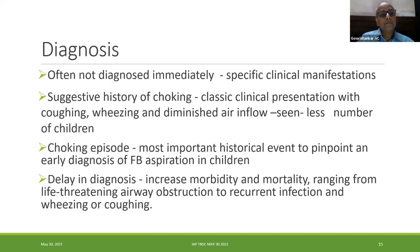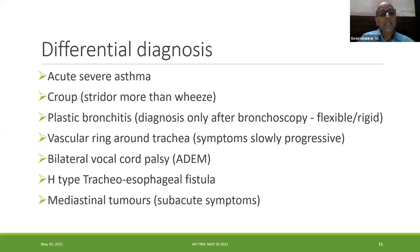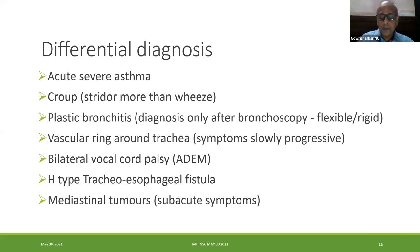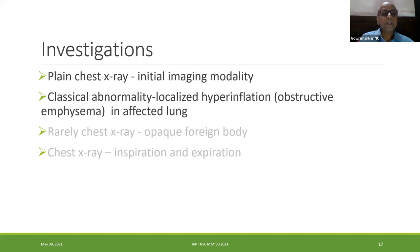Diagnosis is often not made immediately because there are no specific clinical manifestations, but history suggesting choking with cough, wheeze, and diminished air entry is the classic presentation indicating foreign body aspiration. Differential diagnosis includes acute severe asthma; in croup, stridor is more prominent than wheeze. Plastic bronchitis is diagnosed only after bronchoscopy. Vascular ring, H-type tracheoesophageal fistula, and mediastinal tumors can also present similarly but have sub-acute or slowly progressive symptoms.